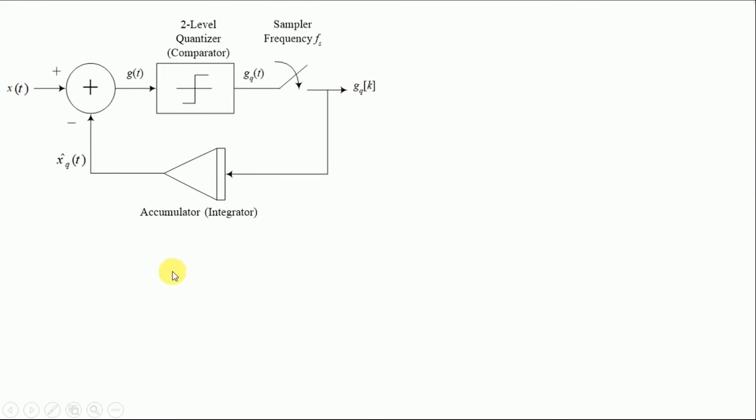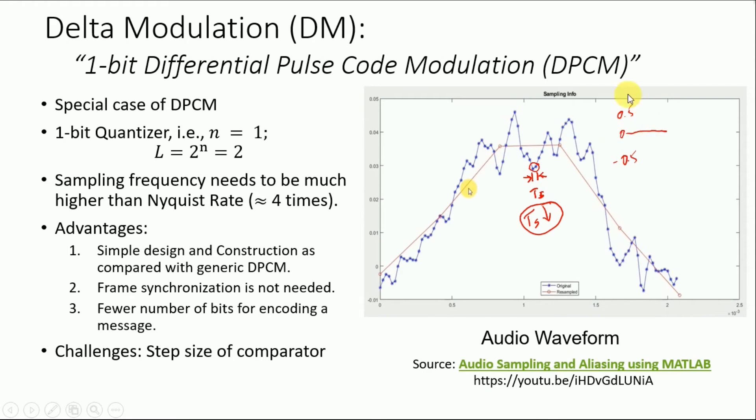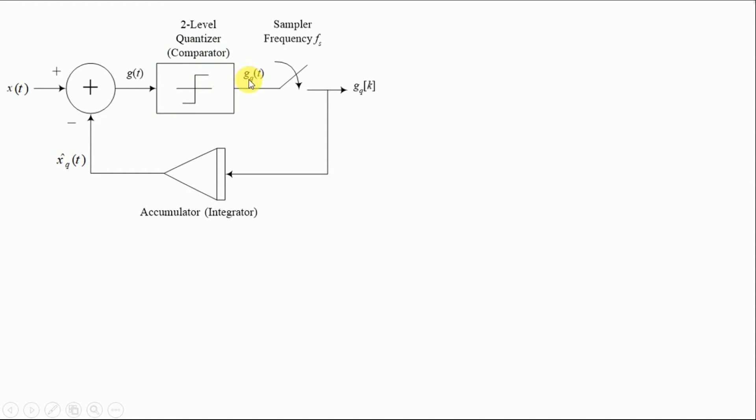So over here, we have the transmitter block for Delta modulation. X of t defines our input and it is fed to a summation block. And then we have g of t that is the output of that summation block. And over here, this is the most important block in our Delta modulation. This is simply a comparator as mentioned over here in this example. So after the comparator we have gq of t and then that is passed through a sampler.